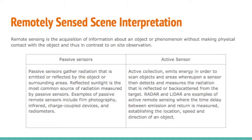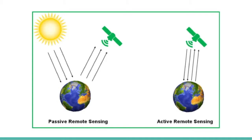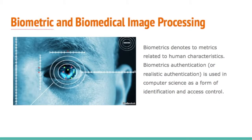Remotely sensed image interpretation is the acquisition of information about an object or phenomenon without making physical contact with it, in contrast to on-site observation. There are two types of sensors: passive sensors and active sensors. For passive remote sensing, radiation comes from sunlight, reflects off objects on Earth, and the equipment detects the reflected radiation to form an image. For active remote sensing, both the radiation and the reflected rays go directly to the equipment.